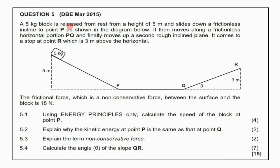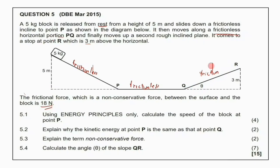Question five: a 5 kg block is released from rest from a height of 5 meters and slides down a frictionless incline to point P. It then moves along a frictionless horizontal portion PQ and finally moves up a second rough incline plane, coming to a stop at point R which is 3 meters above the horizontal. The surface from the start to Q is frictionless, and only Q to R has friction. The frictional force — a non-conservative force — between the surface and the block is 18 newtons.